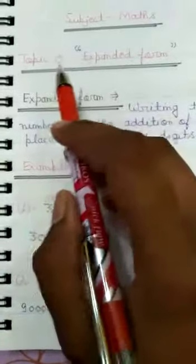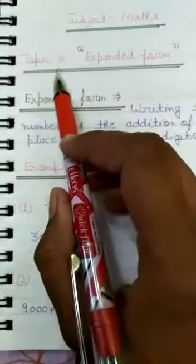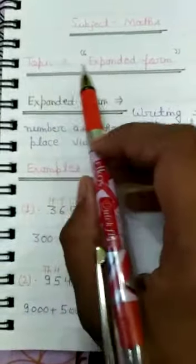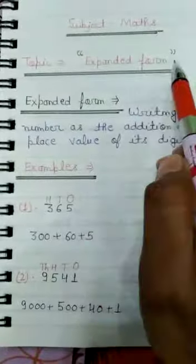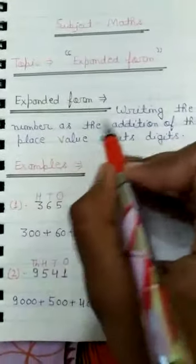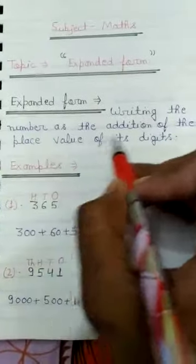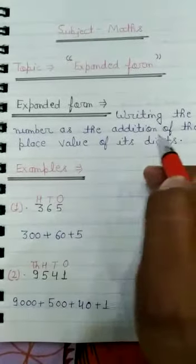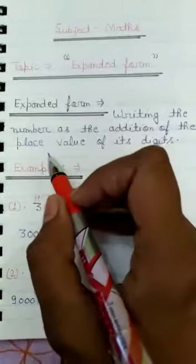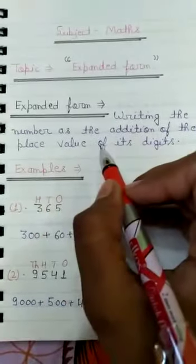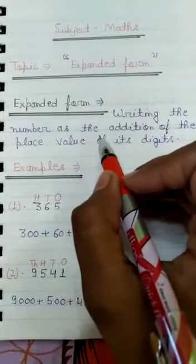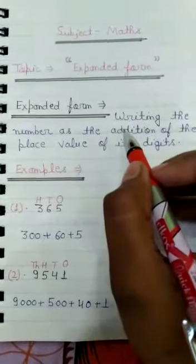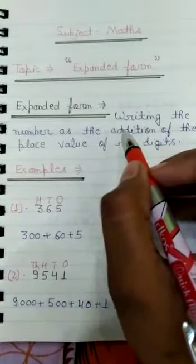Good morning my dear students. Today we will discuss about the topic of expanded form. What is expanded form? Writing the number as the addition of the place value of its digits. Kisi bhi digit ki place value ko add karke likhte hain. Isse kehte hain expanded form.